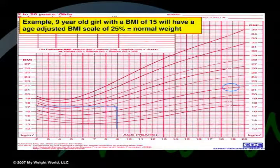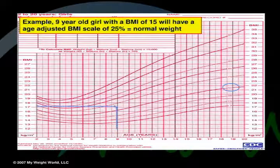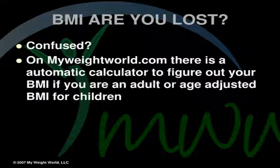Graphic 2: This is the girl's adjusted BMI chart. For a 9-year-old girl with a BMI of 15, find her BMI on the left-hand vertical column and follow it horizontally to her age. The two lines meet on the third curvy line, which is the 25th percentile. This girl has an adjusted BMI of 25% and is of normal weight. Remember, on MyWeightWorld.com there is an automatic calculator to figure out BMI for adults or age-adjusted BMI for a child.